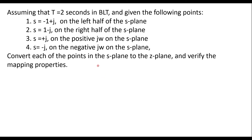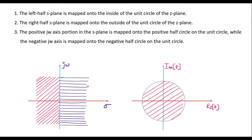Before solving this problem, I will explain the mapping properties between the s-plane and the z-plane. Assuming that this is the s-plane and let this be the z-plane. Here, the radius of this circle is unity, that is 1. Let this be the real axis of z and this is the imaginary axis of z. Similarly, in s-plane, this is the real axis and j omega is the imaginary axis. The first mapping property: the left half of s-plane is mapped onto the inside of the unit circle of the z-plane.